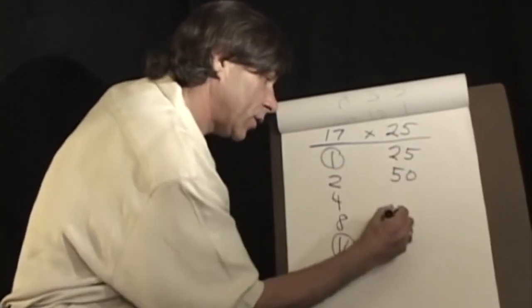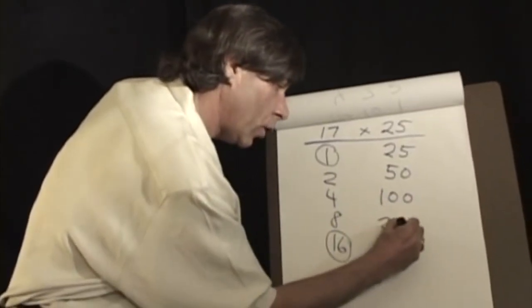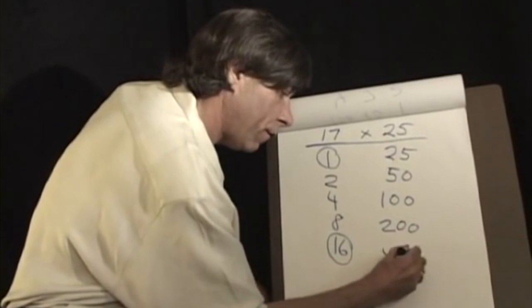Twice twenty-five is fifty, twice that, one hundred, twice that, two hundred, twice that, four hundred.